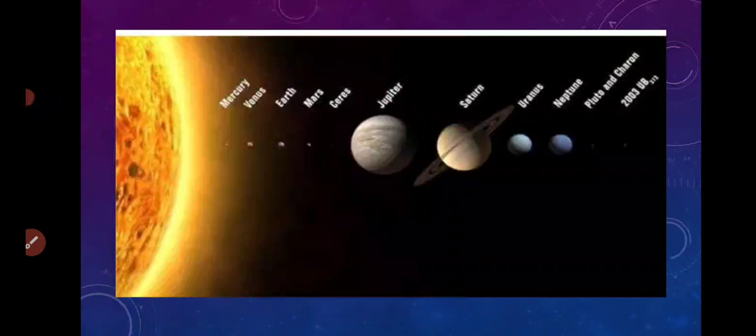Yes, this is our solar system. The sun and the other planets form the solar system. Sun کے ساتھ یہ جو planets آپ کو visible ہو رہے ہیں، یہ سب مل کر solar system form کرتے ہیں.